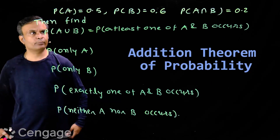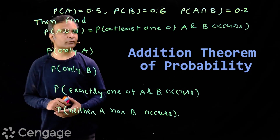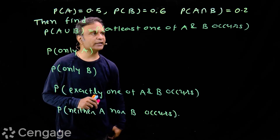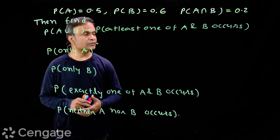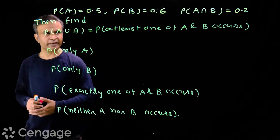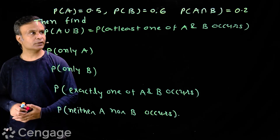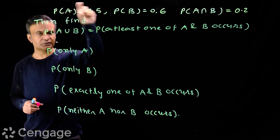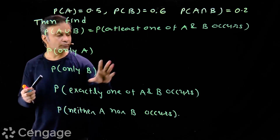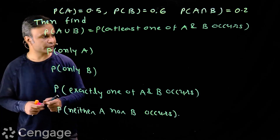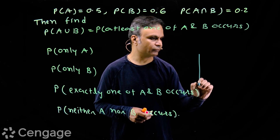We have this data: probability of event A is 0.5, probability of event B is 0.6, and probability of event A intersection B — that means A and B — is 0.2. We have to find the probabilities of different events. We can put this data on a Venn diagram, which gives us a very easy solution.